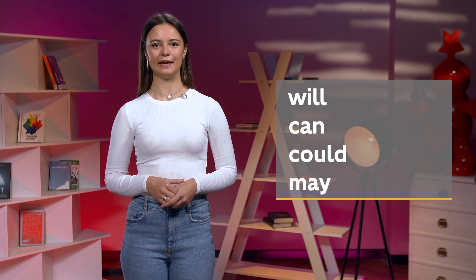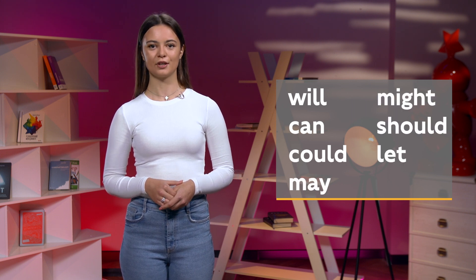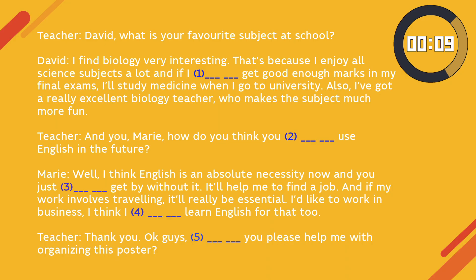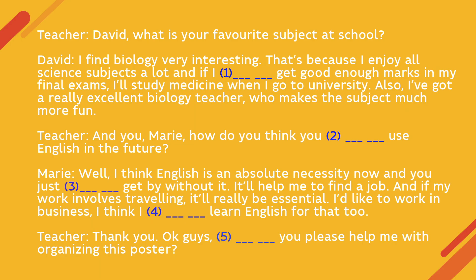Alright, let me once again remind you of the modal verbs you need to use: will, can, could, may, might, should, and let. What do you think are the correct words to fill in the gaps? You have some time to think now. Now let's check. For gap 1, we need to use the modal verb 'can' to express the ability to do something.